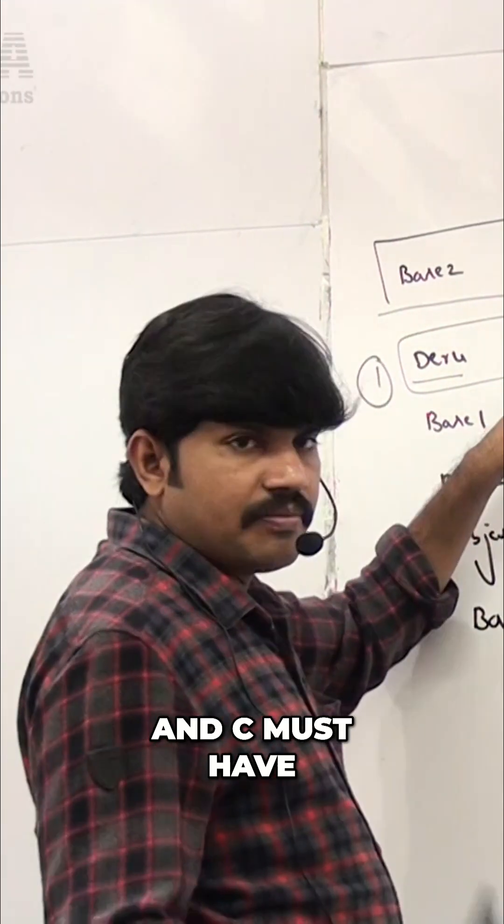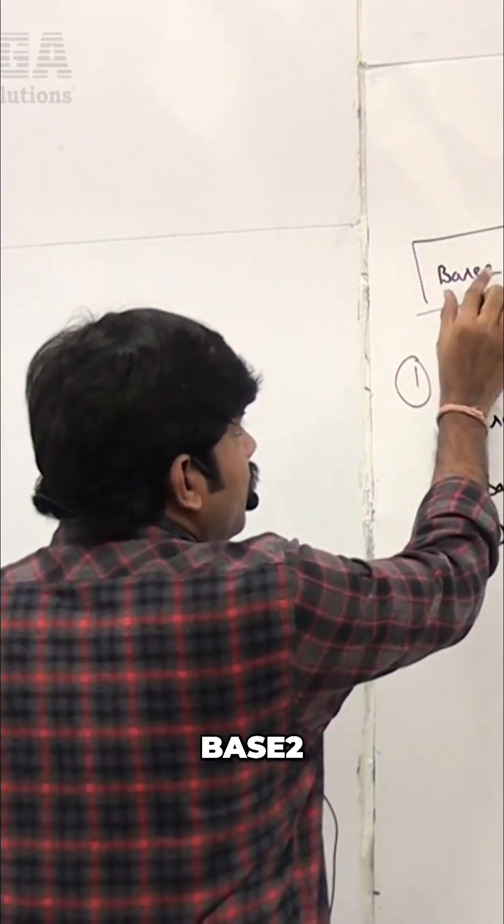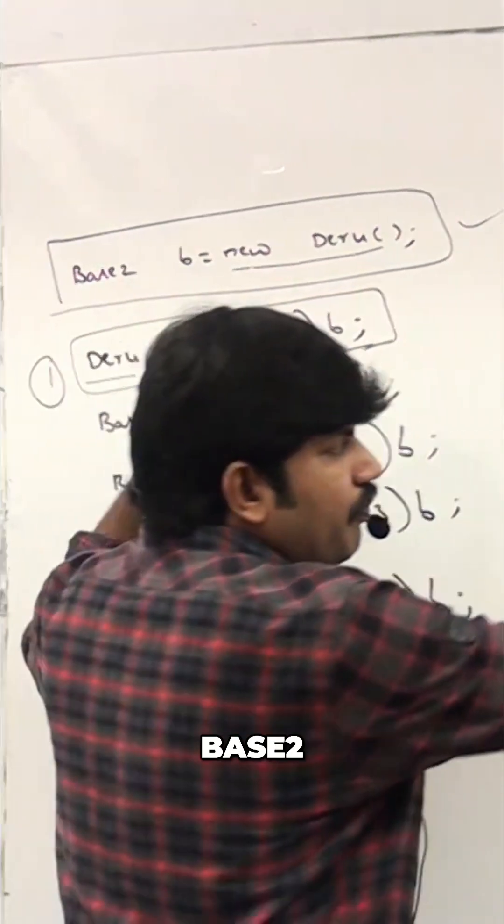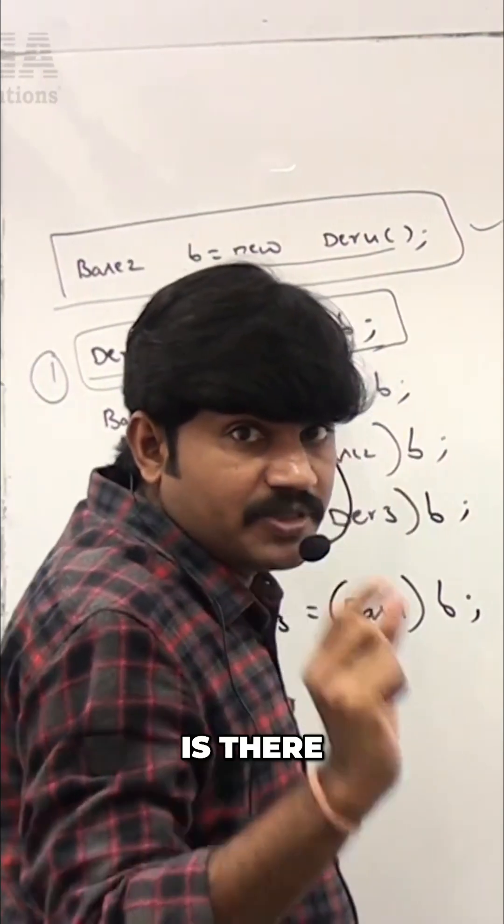of d and c must have some relation. Here b is what type? Base 2. And derived of 4, is there any relation? Base 2 to derived of 4 has a parent to child relationship, that's why